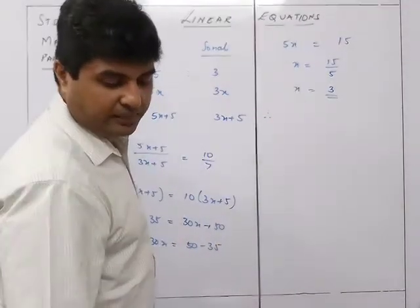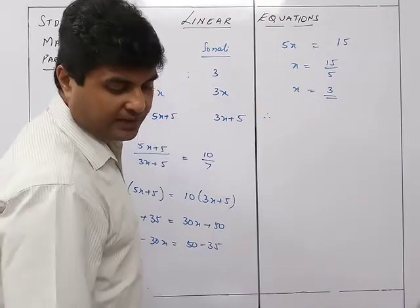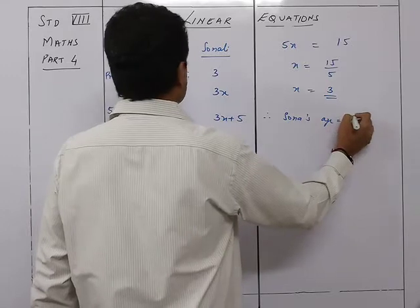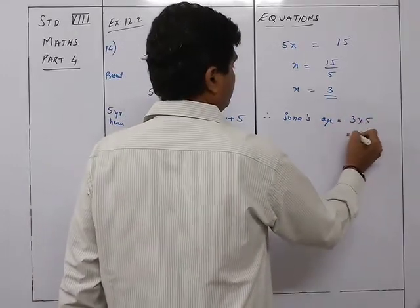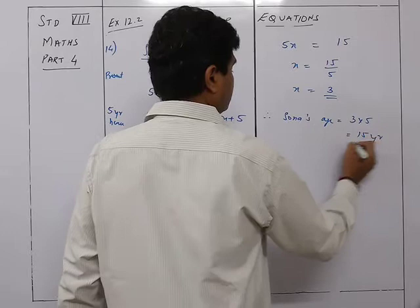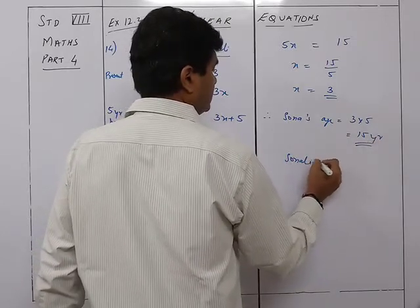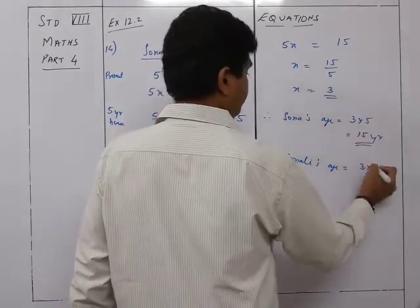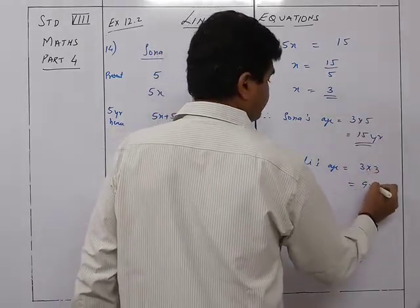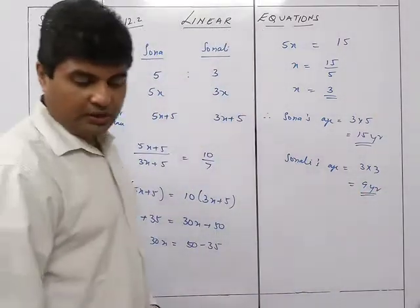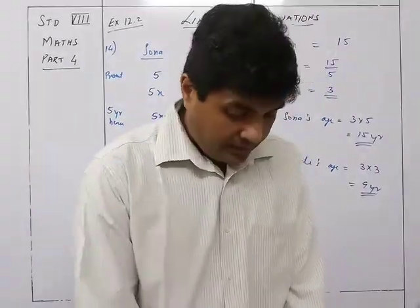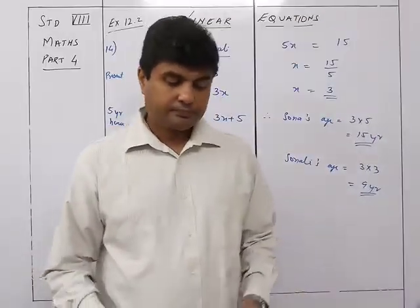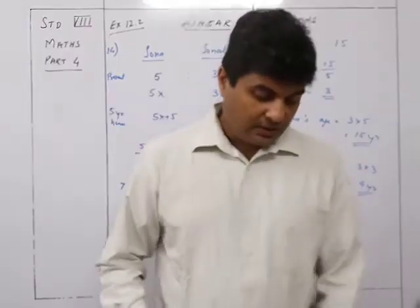Solving: 35x minus 30x = 50 minus 35, so 5x = 15, therefore x = 3. Present age of Sona = 5 into 3 = 15 years, and Sonali = 3 into 3 = 9 years. That was sum number 14.